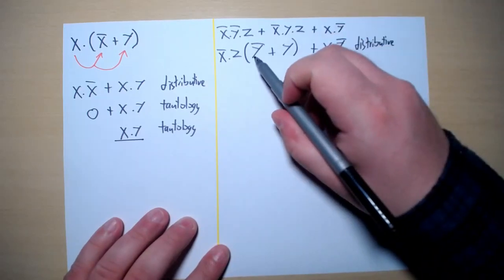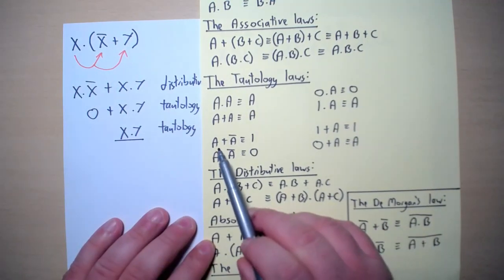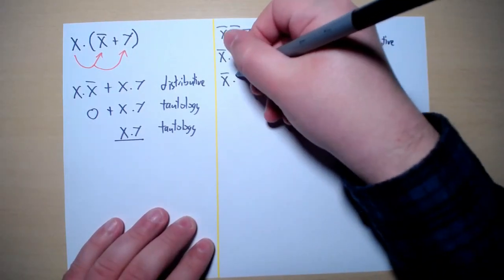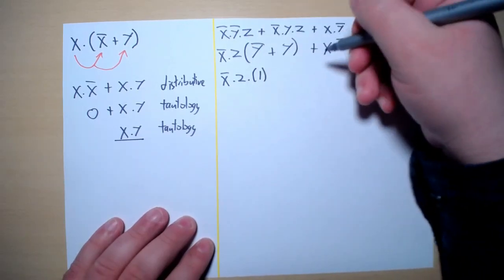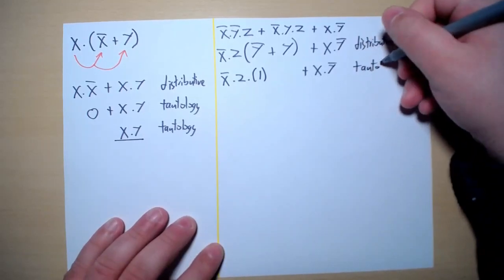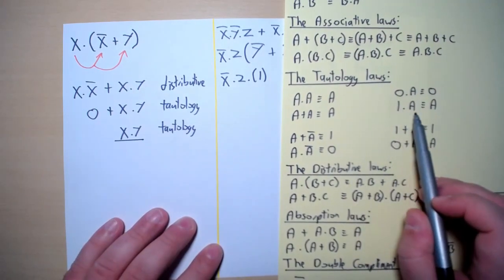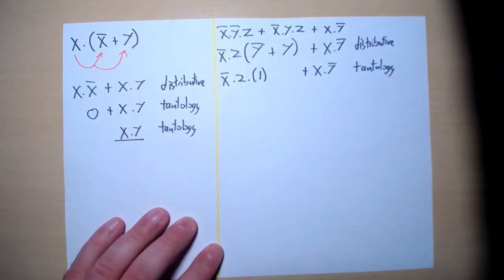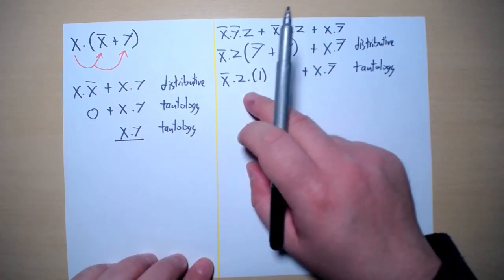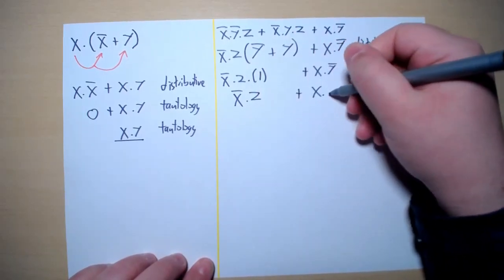Y-naught or Y using the tautology law gives us 1. Therefore we get X-naught and Z and 1, or X and Y-naught. Using the tautology law, 1 and A gives us A, so we can get rid of the 1. We will get X-naught and Z or X and Y-naught.